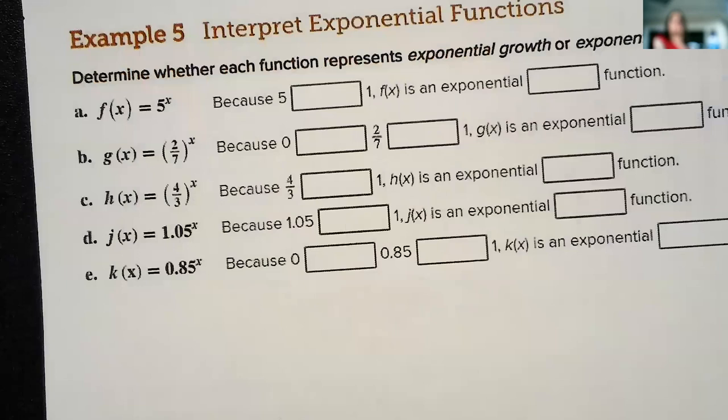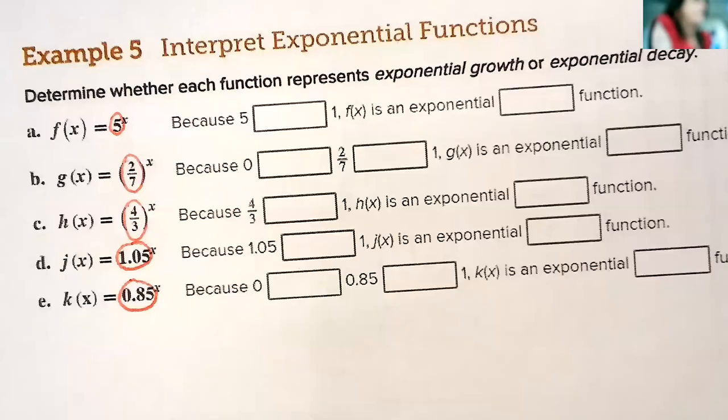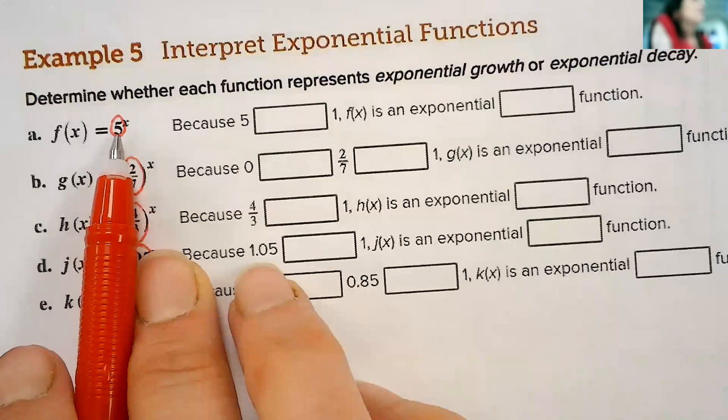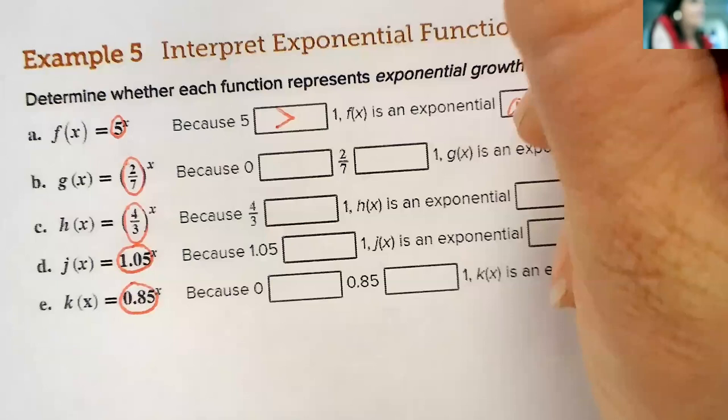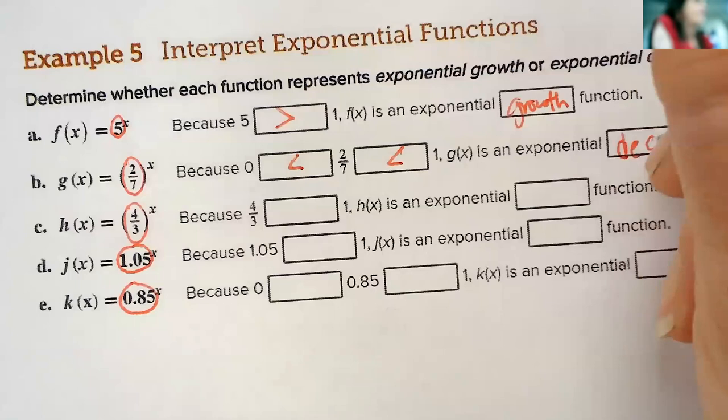Okay, so can we identify if it's growth or decay by looking at the value that is right here? If it is, in absolute value, greater than 1, then it's growth. If it is in between 0 and 1, meaning it's a fraction, then it is exponential decay.